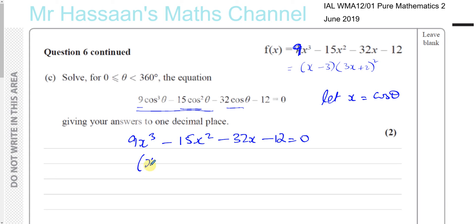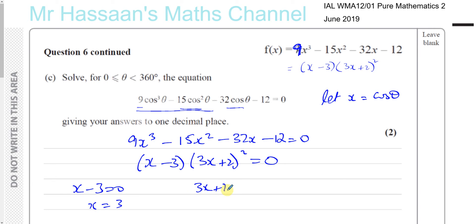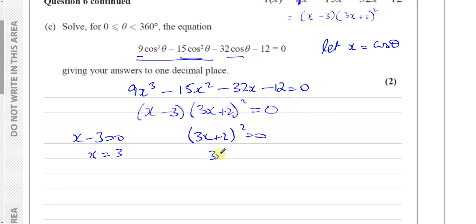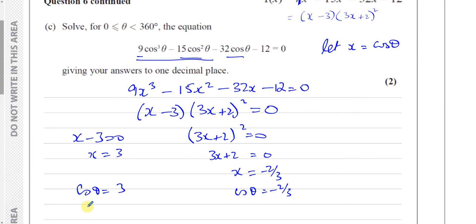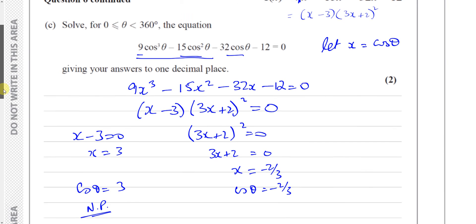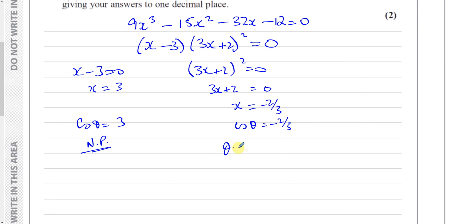We already factorized this as (X minus 3)(3X plus 2) squared equals zero. So either X minus 3 equals zero, giving X equals 3, or 3X plus 2 equals zero, giving X equals minus two thirds. Therefore cosine theta equals 3 or cosine theta equals minus two thirds.